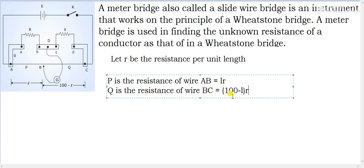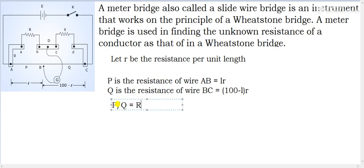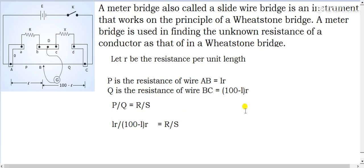When the bridge is balanced, we use the formula P/Q = R/S. Substituting: L·r divided by (100 − L)·r equals R divided by S, where R is the known resistance and S is the unknown resistance. The small r cancels from both numerator and denominator.